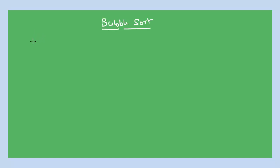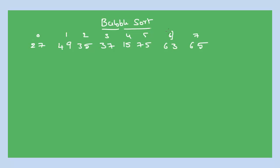Let us start the procedure of bubble sort. First, I am taking some values: 27, 49, 35, 37, 15, 75, 63, and 65. Let us count the index values: 0, 1, 2, 3, 4, 5, 6, and 7. These are the index values of a particular array — a[0], a[1], a[2], etc.